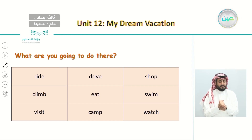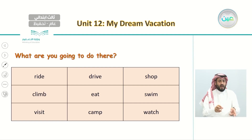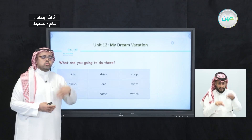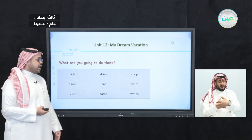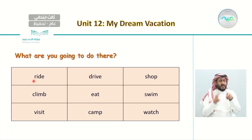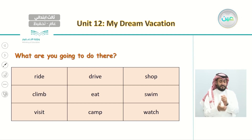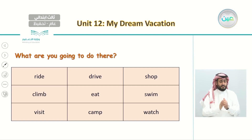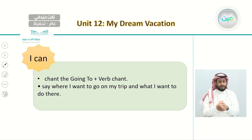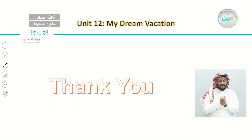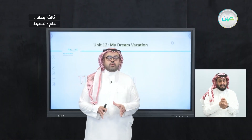Then move to the second question: What are you going to do there? Notice two uses of 'going to' — 'where are you going?' refers to a place, while 'what are you going to do?' refers to plans and actions. Your partner can choose from actions: ride, climb, visit, drive, eat, camp, watch, swim, shop. They answer: I am going to drive, I am going to eat, I am going to shop. At the end of our lesson, I hope you can say the chant and tell us where you want to go and what you want to do. Thank you for watching and I'll see you next time.